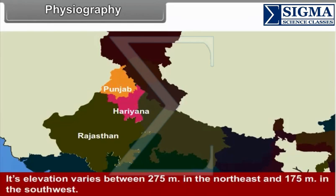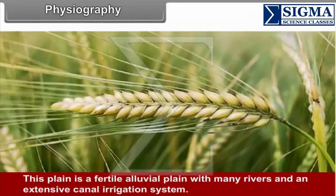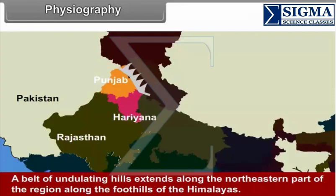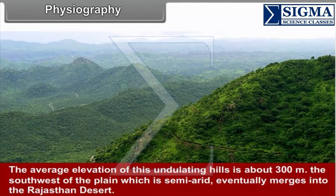Its elevation varies between 275 meters in the north-east and 175 meters in the south-west. This plain is a fertile alluvial plain with many rivers and an extensive canal irrigation system. A belt of undulating hills extends along the north-eastern part of the region along the foothills of the Himalayas, with an average elevation of about 300 meters.